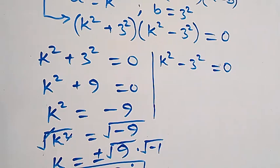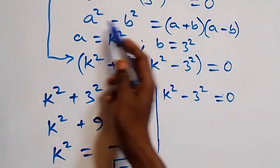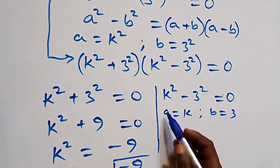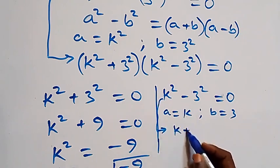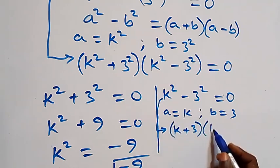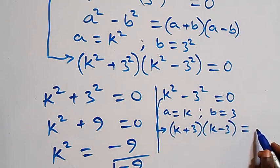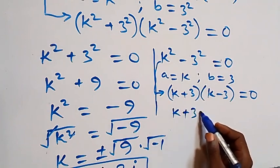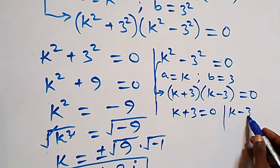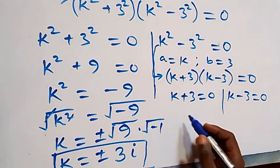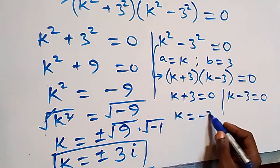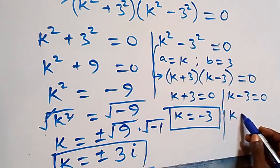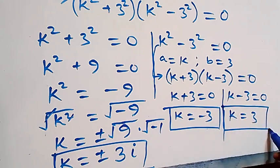For the second case, this follows from the difference of two squares, where a is k and b is 3. So we get (k + 3)(k - 3) = 0, which implies either k plus 3 equals 0, giving k equals minus 3, or k minus 3 equals 0, giving k equals 3.